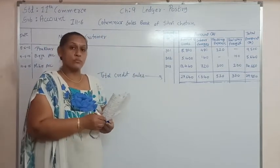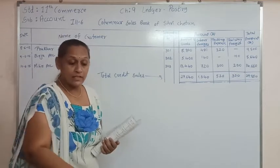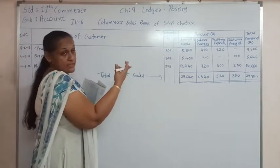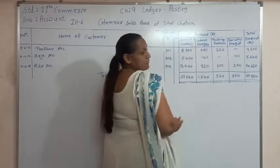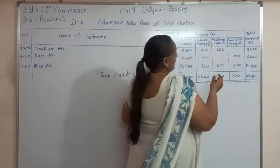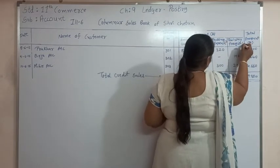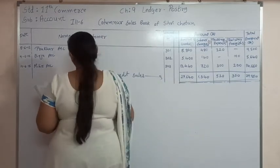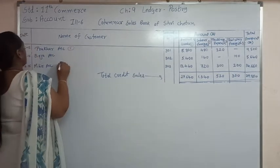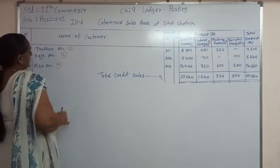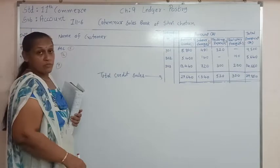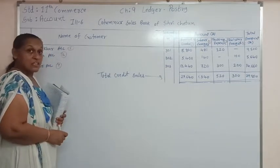Now from the subsidiary book we are going to prepare the ledger. How many ledger accounts are we supposed to prepare? The first account is sales account, the second is labour charges account, the third is packing expense, the fourth is railway freight. And the other accounts are the debtors' accounts: first will be Prakhar account, second will be Birju, and third will be Mihir. So for the posting we have to prepare 7 accounts — 4 accounts for expenses and 3 accounts for debtors.